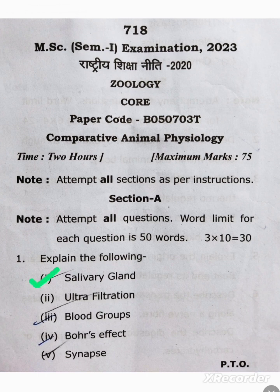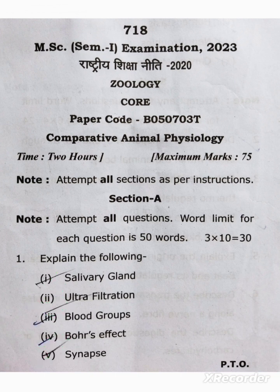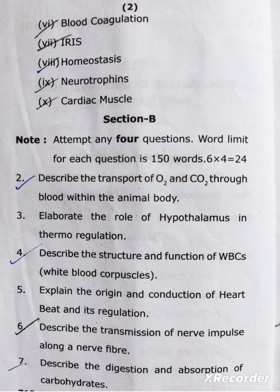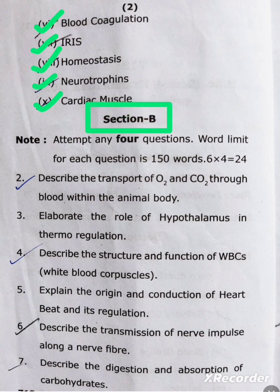The first question says explain the following: number one salivary gland, number two ultra filtration, number three blood group, number four Bohr effect, number five synapse, number six blood coagulation, number seven iris, number eight homeostasis, number nine neurotrophins, and number ten cardiac muscles. These are the Section A questions for reading.